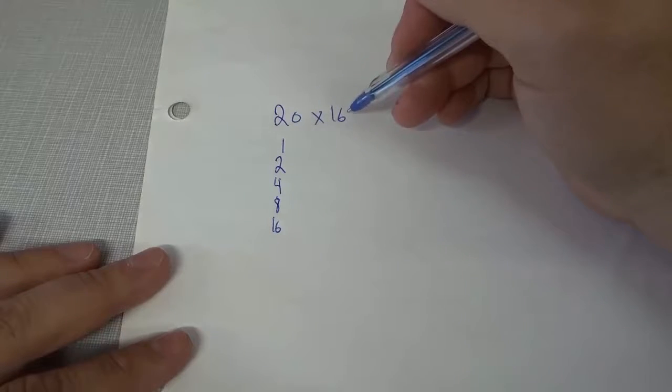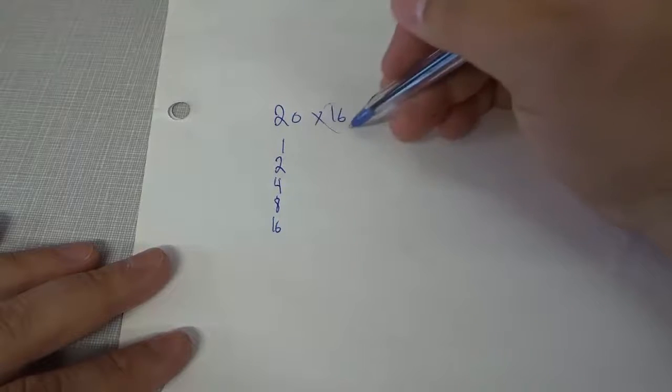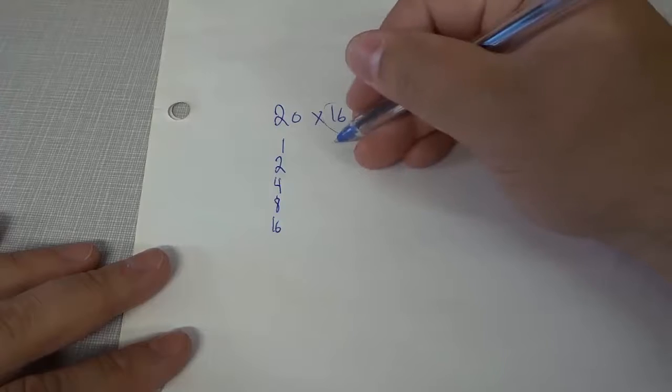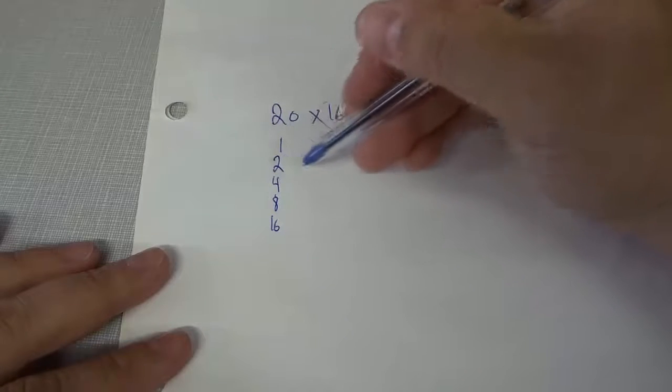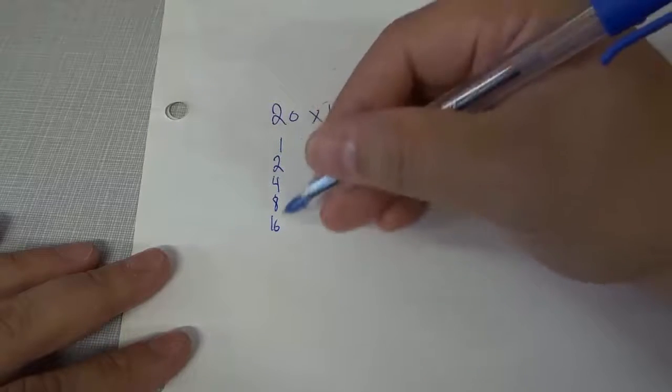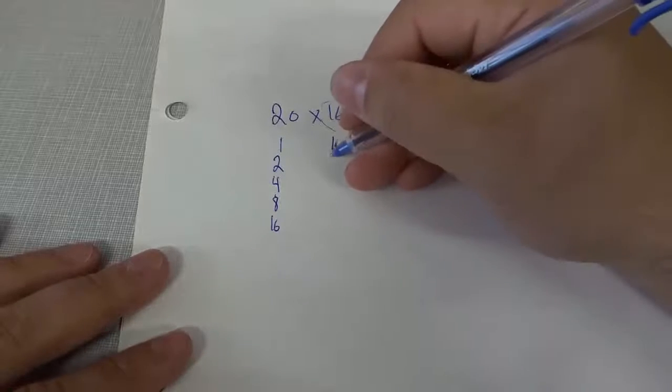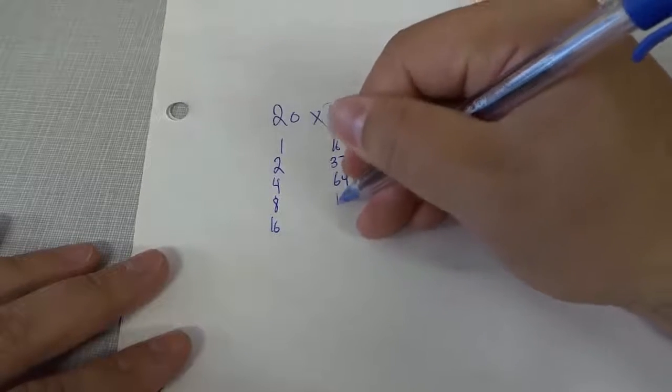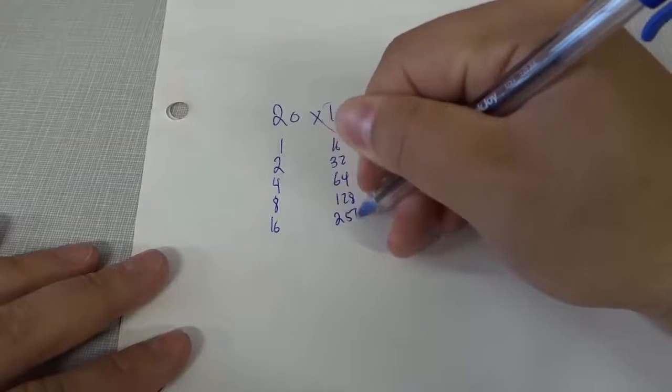Now we're going to move on to the right hand side here. What we're going to do is we're going to take this number 16 and we're going to double it, start off with 16 and line it up with the numbers to the left and double it up until we get to this row right here. So 16, 32, 64, 128, 256.